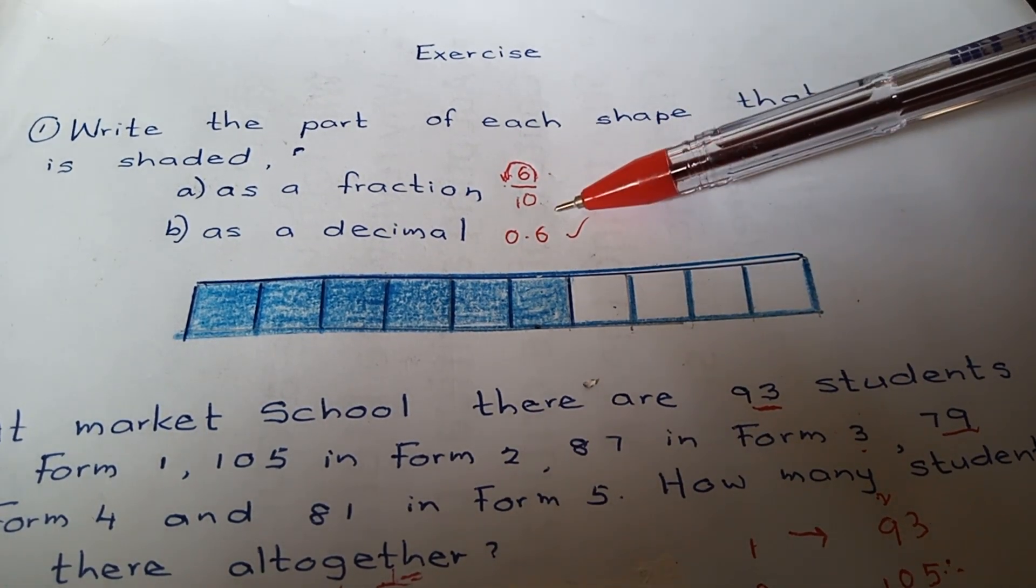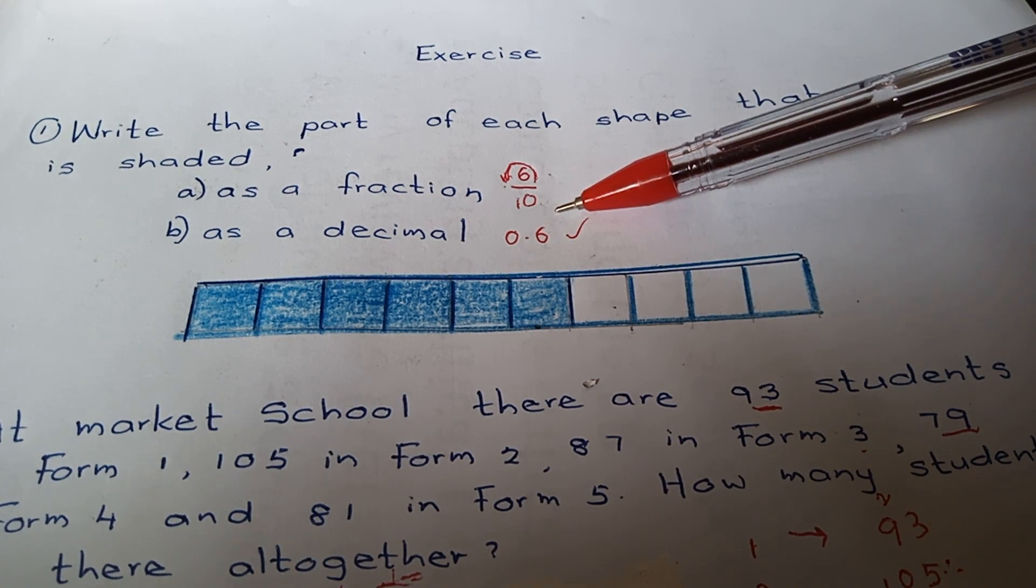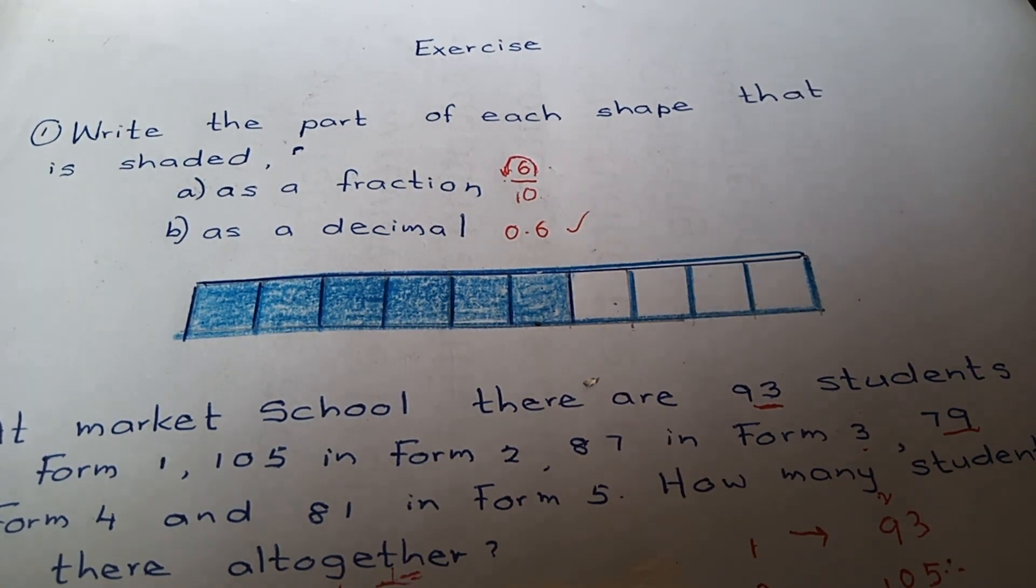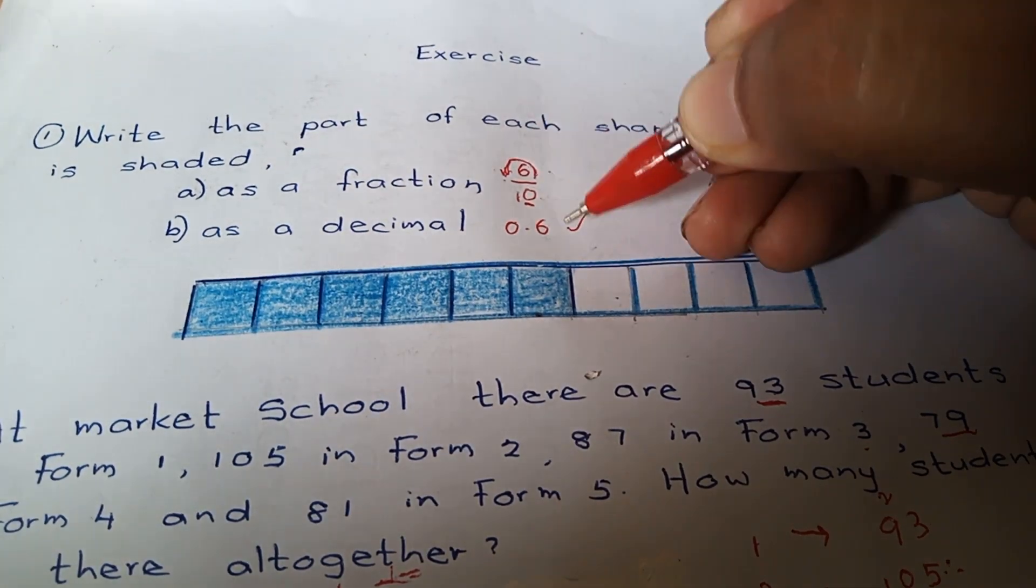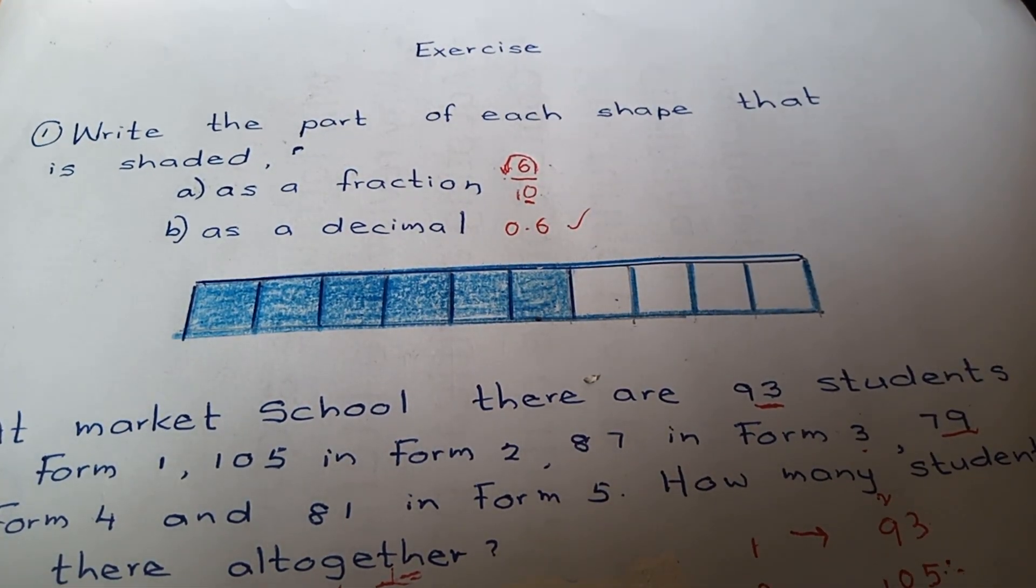So we can write this as a fraction: six over ten. The same way we can write this one as a decimal. You have to move one decimal place to the left side, then the answer will be 0.6.